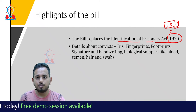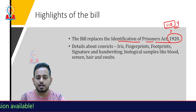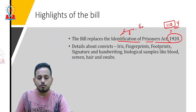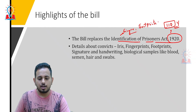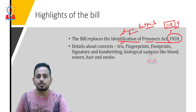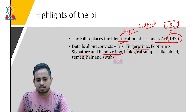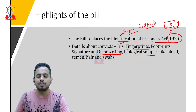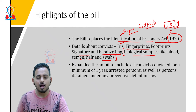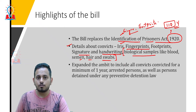What are the details this bill aims to collect? The earlier act — the Identification of Prisoners Act of 1920 — demanded that fingerprints and footprints be collected. But the recently tabled bill also includes iris scan, fingerprints, footprints, behavioral aspects like signature and handwriting, and also biological samples. This is where the bill creates controversy — when it talks about biological samples such as blood, semen, hair, and swabs.